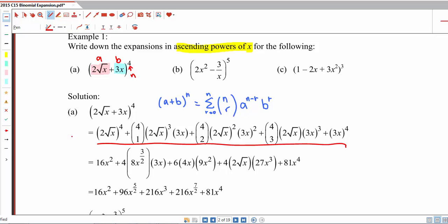Taking note that for the first term, 4 choose 0 is equal to 1, and so is for the last term, 4 choose 4 is also equal to 1. All these values of n choose r can actually be computed through your GC. You'll notice that there are terms with square root x, so we want to convert this into indices in which this is actually x to the power of half. Therefore you see a 3 over 2 here.